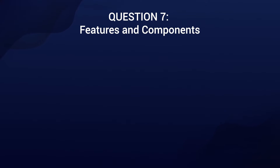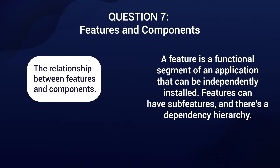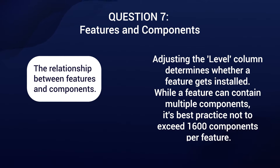Let's dig deeper into the relationship between features and components. A feature is a functional segment of an application that can be independently installed. Features can have sub-features and there's a dependency hierarchy. Adjusting the level column determines whether a feature gets installed or not. While a feature can contain multiple components, it's best practice not to exceed 1,600 components per feature.